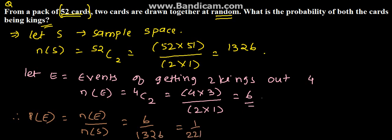Therefore, we can say that the probability of getting both the cards being kings is 1 upon 221, which is the solution for the given problem. Thank you.